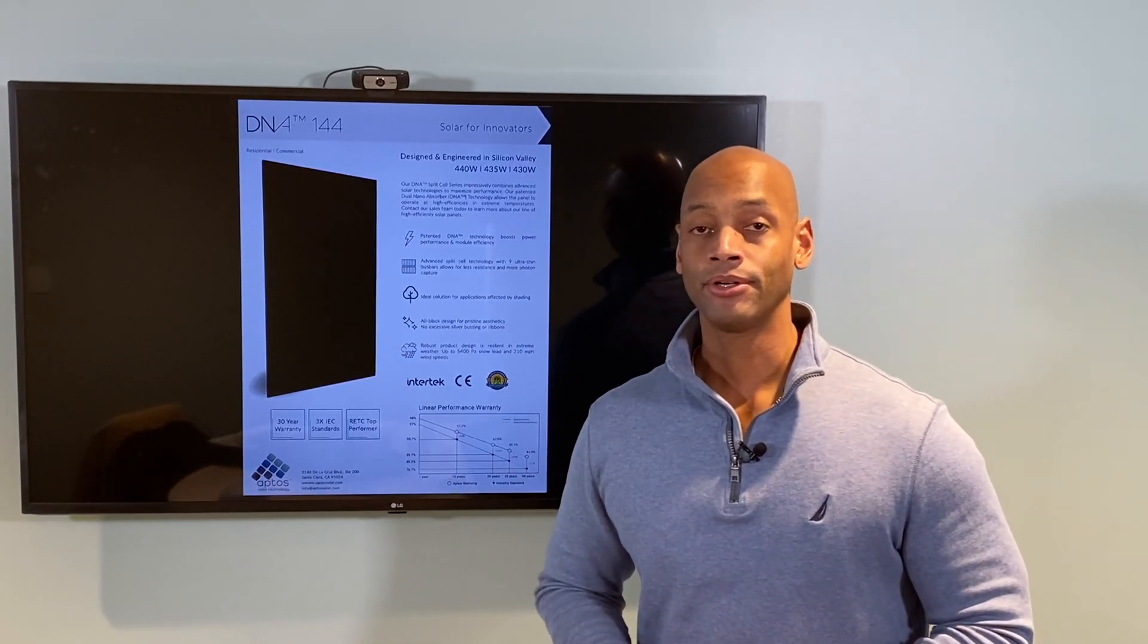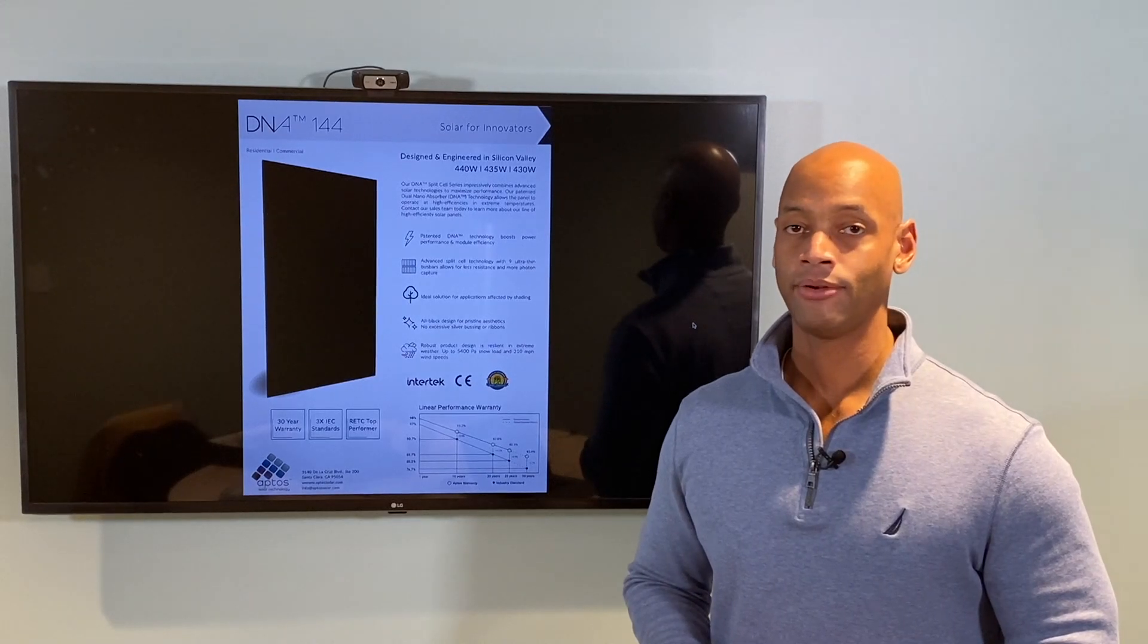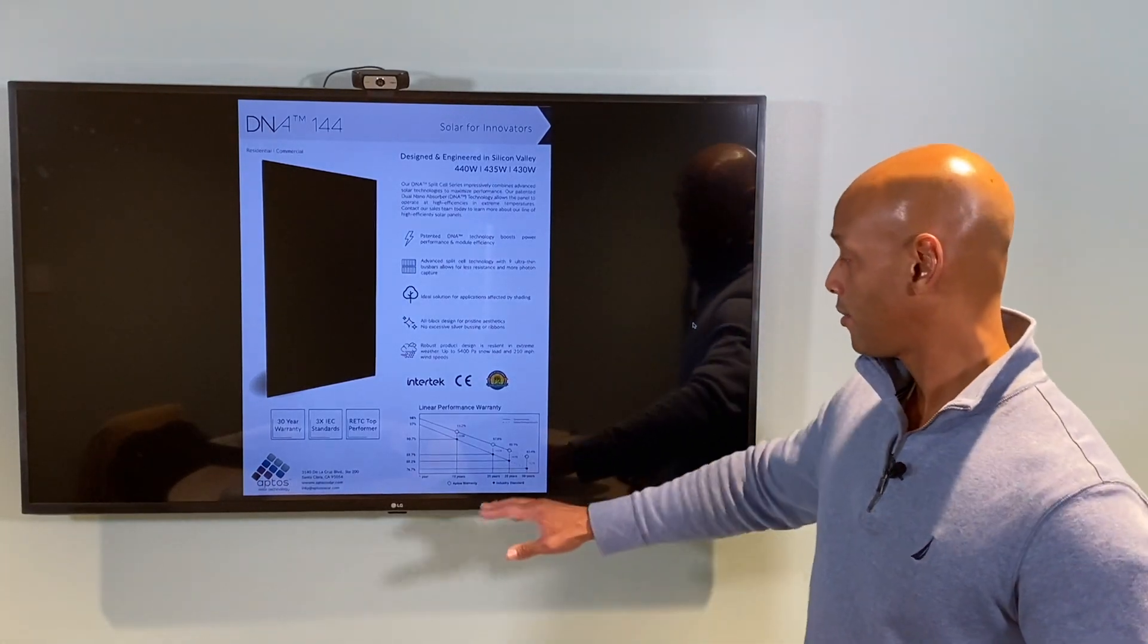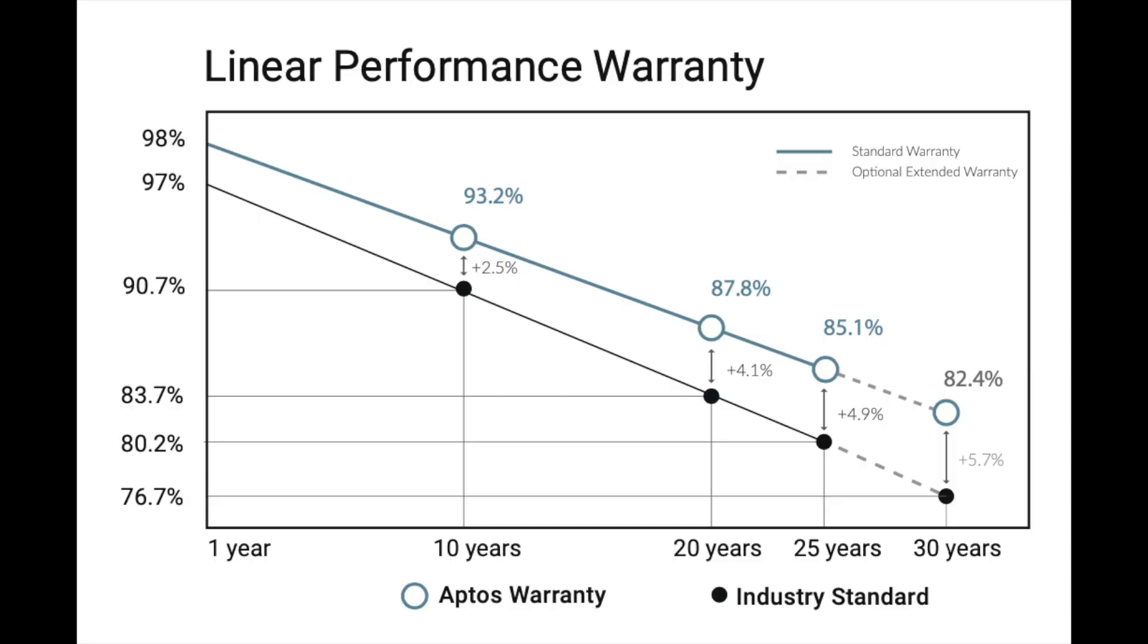In terms of warranty, Aptos also has one of the industry leading warranties, going out to 30 years with guaranteed power of 82.4 percent in year 30.